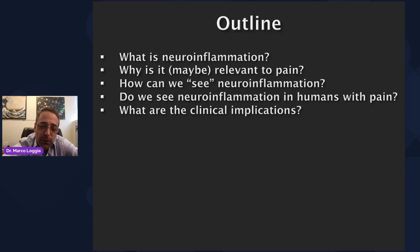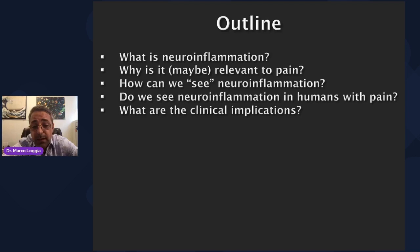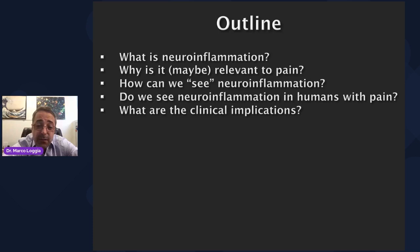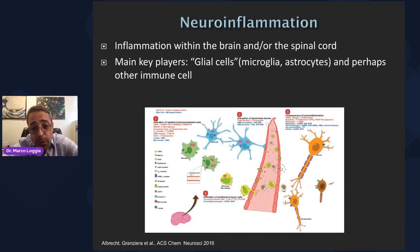Here is the outline of the talk. First, an introduction to neuroinflammation — what is it, very briefly — and then why it's relevant to pain. I add a 'maybe' because until recently we didn't know to what extent it would be relevant to pain, and even now there are a lot of open questions. Then I'll discuss how we can visualize neuroinflammation in people, and then the most important question: do we see inflammation in humans with chronic pain conditions including fibromyalgia? Finally, the big 'so what' — what are the potential clinical implications?